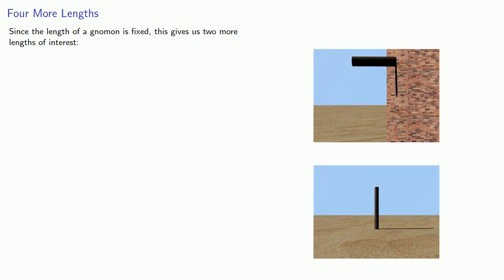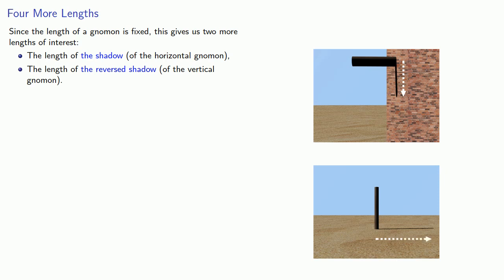Since the length of the gnomon is fixed, this gives us two more lengths of interest. First, what we could call the length of the shadow of the horizontal gnomon, or the length of the reverse shadow of the vertical gnomon.